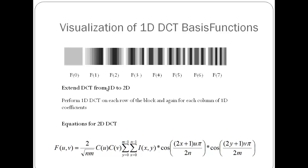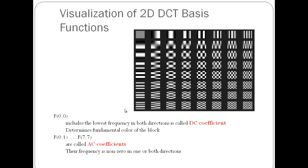To extend the DCT from 1D to 2D, we apply 1D DCT to each row of the block and then again to each column. This is the mathematical representation of a 2D DCT. To visualize this, F00 includes the lowest frequency in both directions and is called the DC coefficient. It determines the fundamental color of the block, while the rest are the AC coefficients.